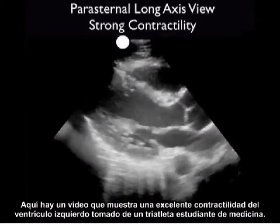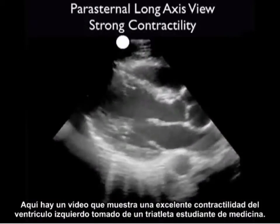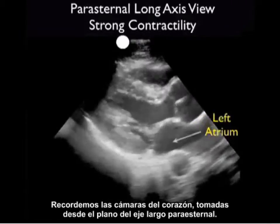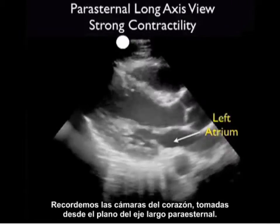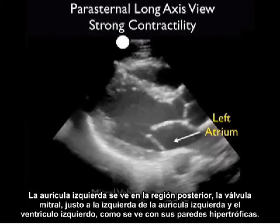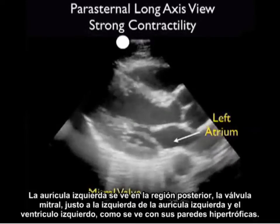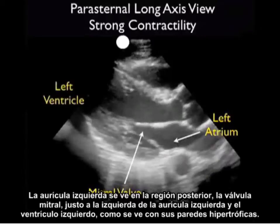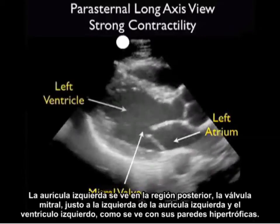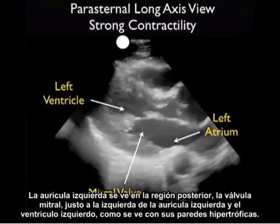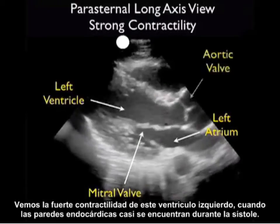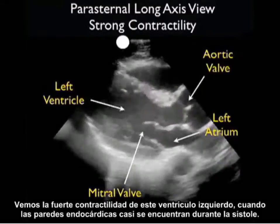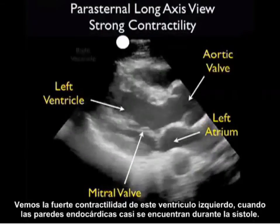Here's a video clip showing excellent contractility of the left ventricle, taken from a medical student triathlete. Recall the chambers of the heart as seen from the parasternal long axis plane: the left atrium in a posterior location, the mitral valve just to the left of the left atrium, and the left ventricle with its hypertrophic walls. Notice the strong contractility of this left ventricle as the endocardial walls almost meet during systole.